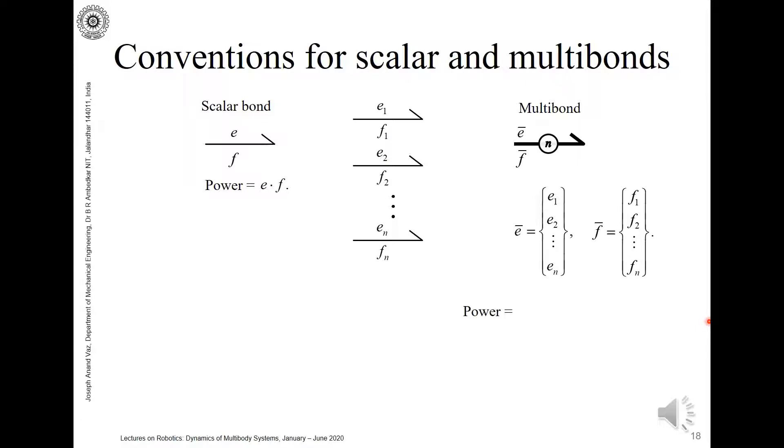Now the power is a scalar and it is the summation of all these individual powers, so you have e1·f1 plus e2·f2 and so on up to en·fn. We can represent this as the summation of ei·fi, i equal to 1 to n, and in matrix form it can be represented as e transpose f, equal to f transpose e.